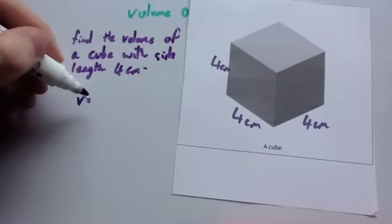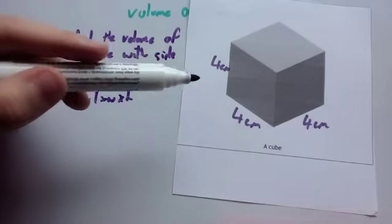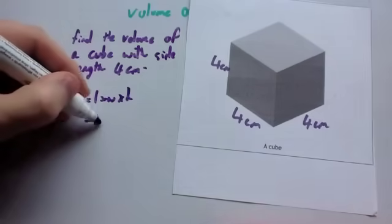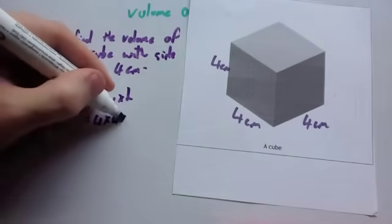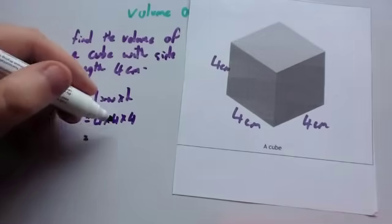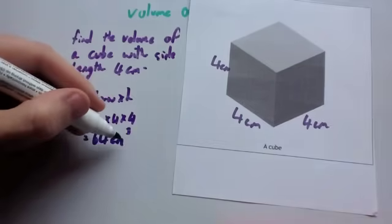Remember, volume equals length times width times height. In this case, the length is 4cm, the width is 4cm, and the height is 4cm. So you're going to do 4 times 4 times 4, or 4³. 4 times 4 is 16, times 4 is 64. So the volume is 64cm³.